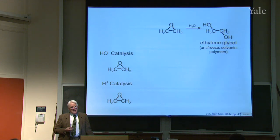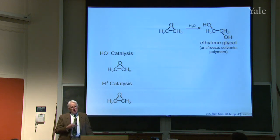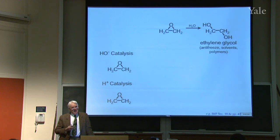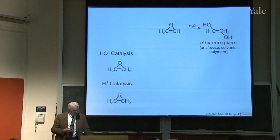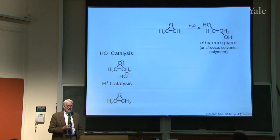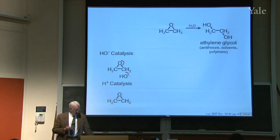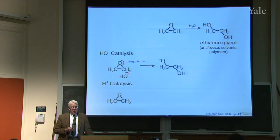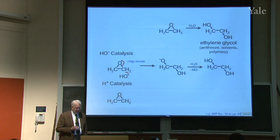Instead of attacking CH sigma star, consider that ethylene oxide is an ether, and ethers don't usually undergo displacement because O⁻ is a bad leaving group. But this is a special case due to the high ring strain, which makes that bond weak. So in fact, it is a backside attack — an SN2 reaction on the CO sigma star — which opens the ring because of ring strain. The product picks up a proton from water, generating ethylene glycol.